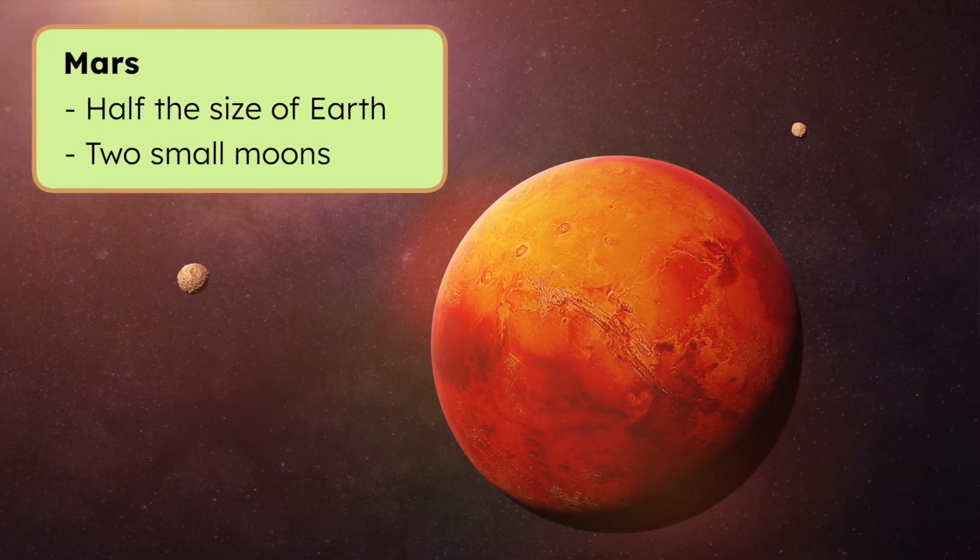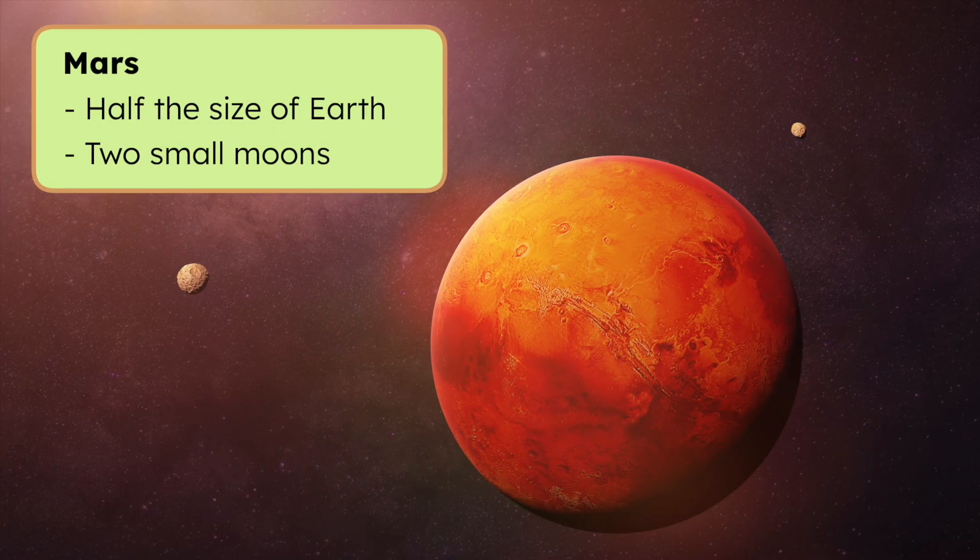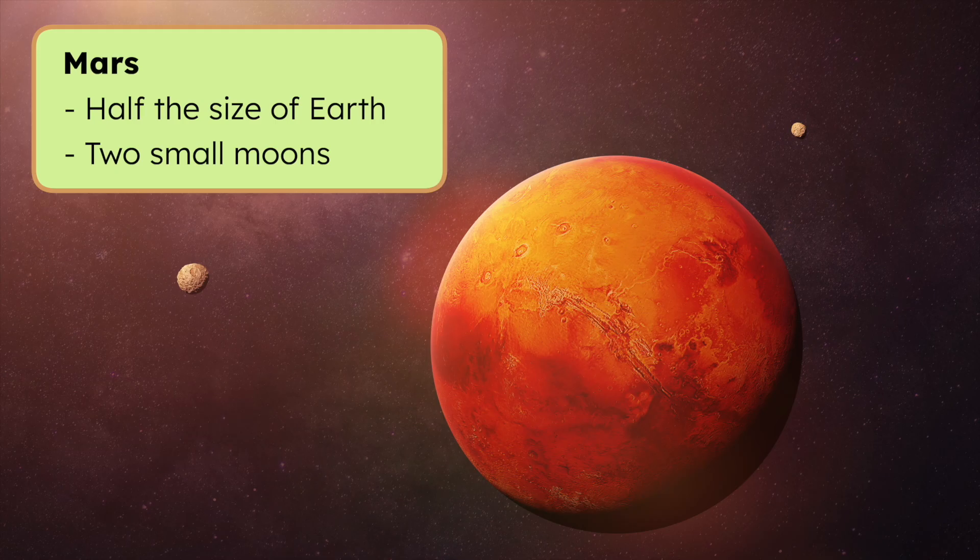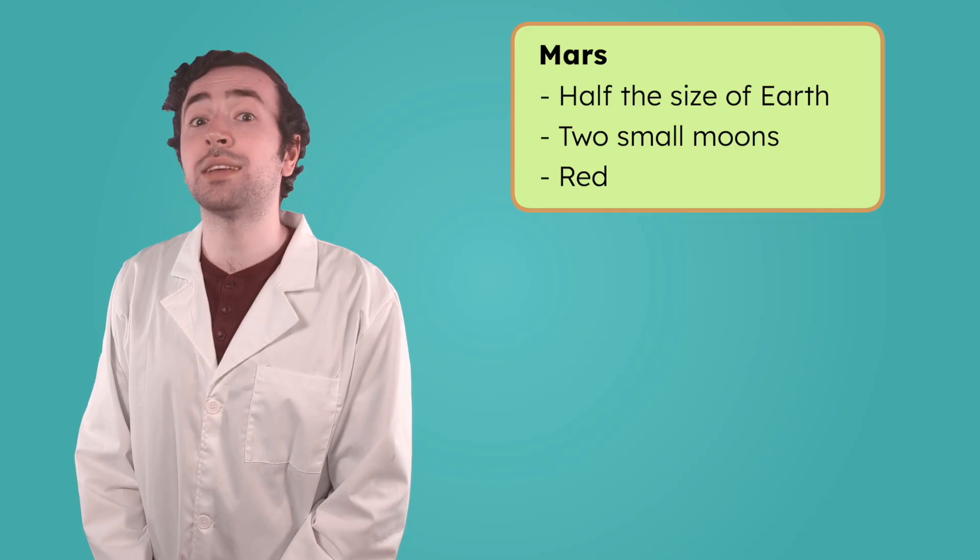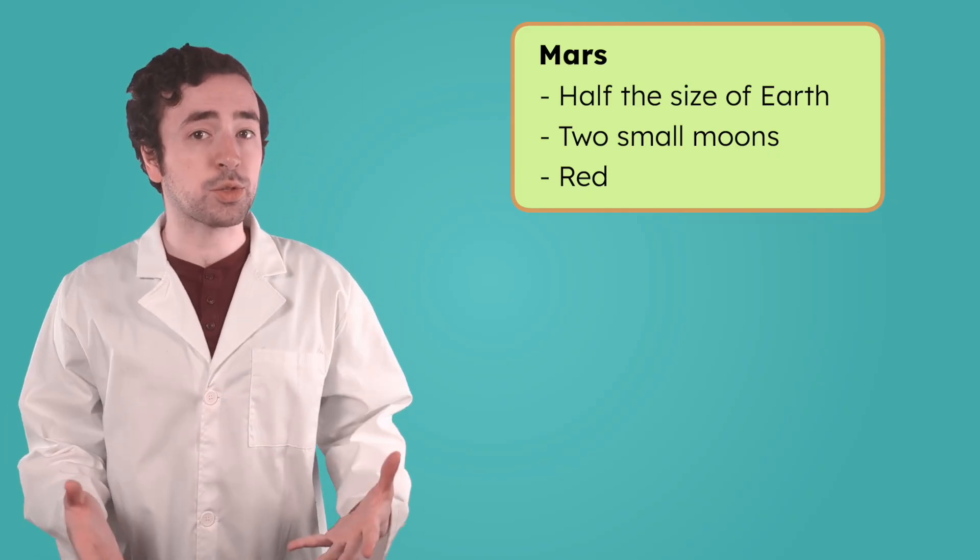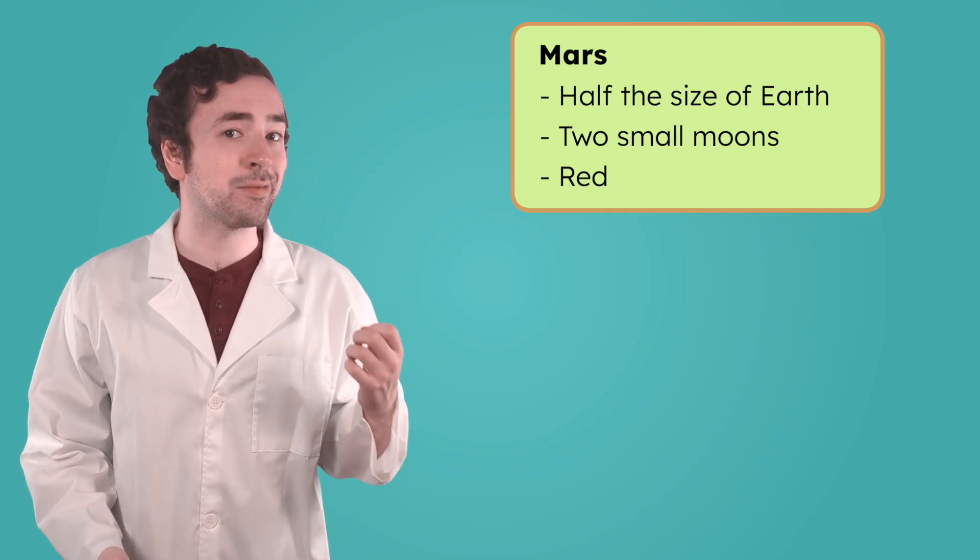The fourth planet from the sun, and the last of the inner planets, is Mars. It's about half the size of Earth, and it has two moons that orbit around it, though they're both smaller than our moon. Because of its color, Mars is also known as the red planet. It looks red because of the iron in the soil.